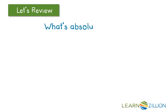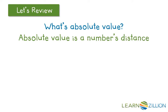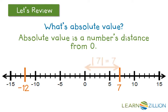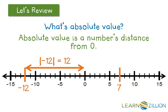Let's review: what's absolute value? Absolute value is a number's distance from zero. Here is a number line with positive 7 and negative 12 noted. Positive 7's absolute value is a distance of 7 away from zero, so that's positive 7. Negative 12's absolute value is a distance of 12 units away from zero, so that is positive 12. Distance is always positive.